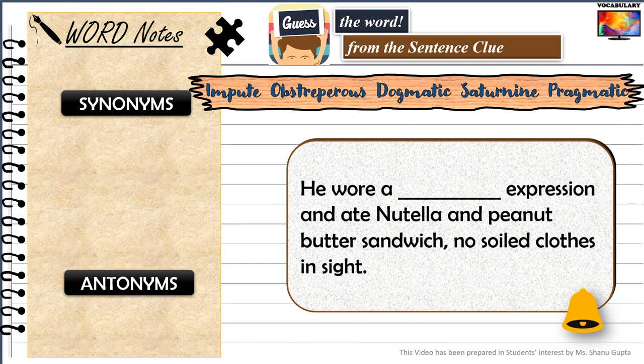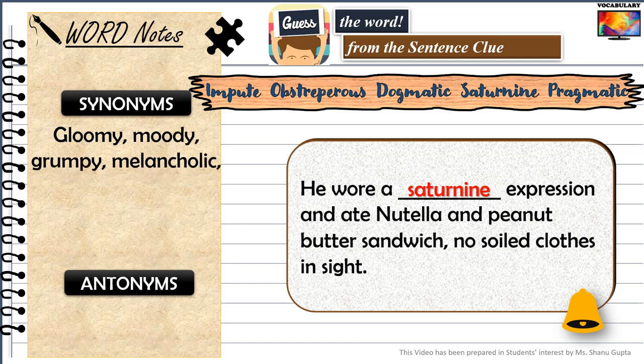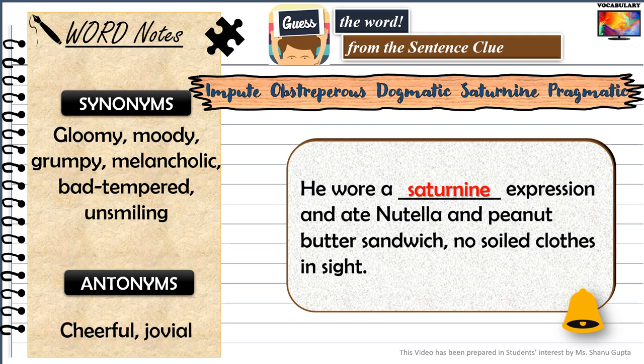'He wore a saturnine expression and ate a Nutella and peanut butter sandwich — no soiled clothes in sight.' The word that fits is saturnine. Synonyms include gloomy, moody, grumpy, melancholic, bad-tempered, and unsmiling. Antonyms are cheerful and jovial.